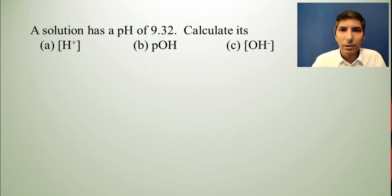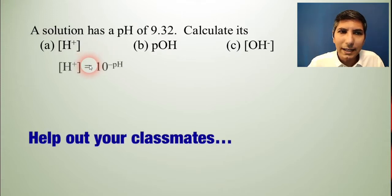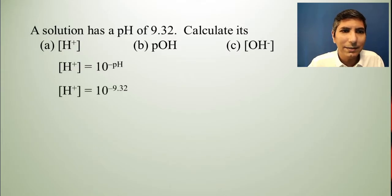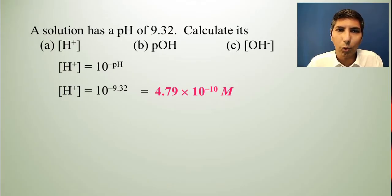Now, let's take what we've learned in this video and the last video and put it all together. Let's imagine that a solution has a pH of 9.32. Let's calculate its H plus ion concentration, its pOH, and its hydroxide ion concentration. Well, let's do part A first. We know that if we have the pH, the H plus is just going to be 10 to the negative pH power. So, I just have to find 10 to the negative 9.32. And a simple scientific calculator will tell me that that's equal to about 4.79 times 10 to the negative tenth moles per liter.